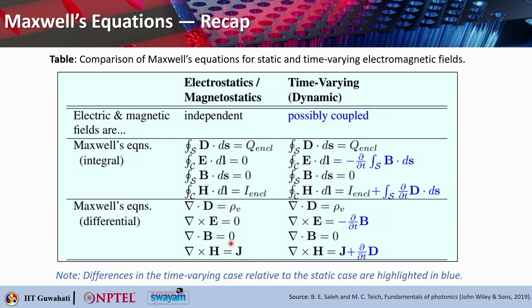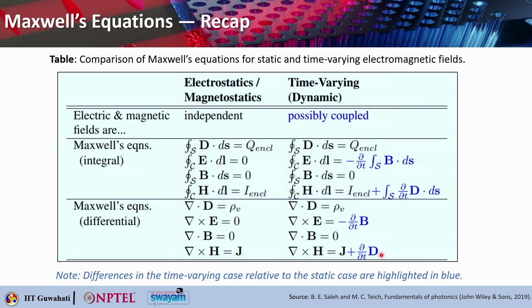These are the same equations in differential form. There are a couple of changes when you go from static to dynamic cases: the curl of E is 0 in electrostatics or magnetostatics, but in the dynamic case, curl of E equals minus ∂B/∂t. Similarly, Ampere's law is modified to Ampere-Maxwell's equation, where curl of H is given as J plus Jd, the displacement current density, or equivalently ∂D/∂t, the time-varying electric flux density.